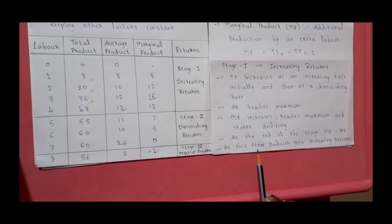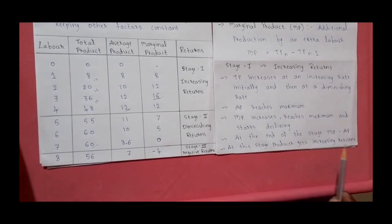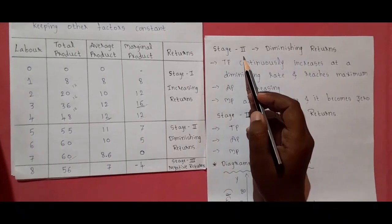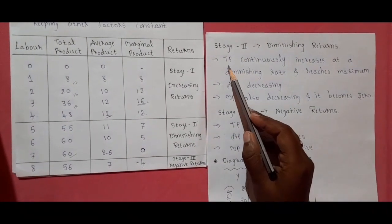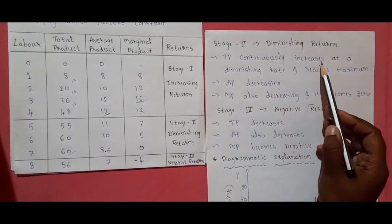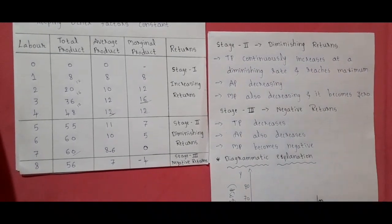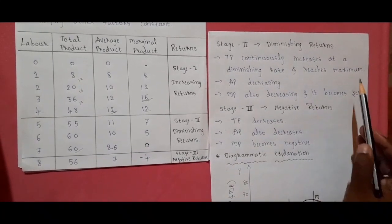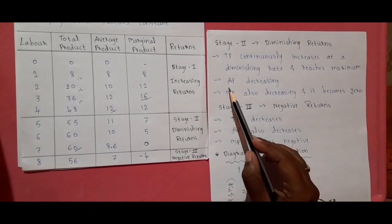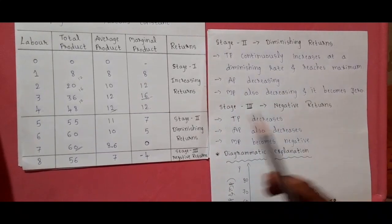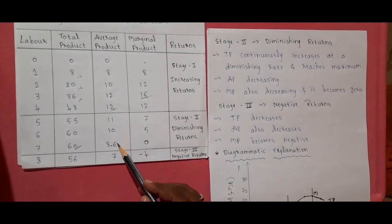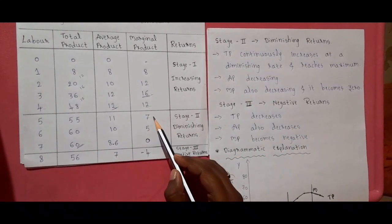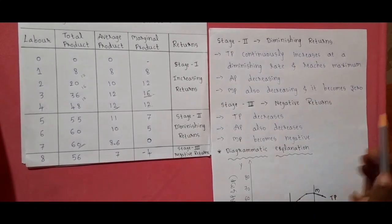At this stage, the producer gets increasing returns. In stage 2, diminishing returns: total product continuously increases at a diminishing rate and reaches maximum. Average product is decreasing in the second stage. Marginal product is also decreasing and it becomes zero.